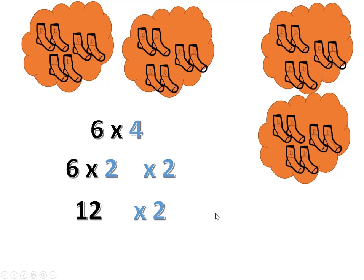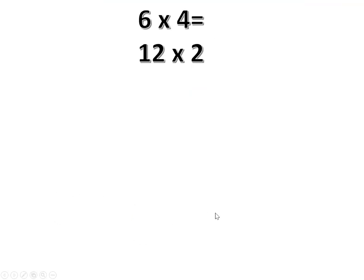How to double 12? Let's rearrange 12 as 10 and 2. So to double it, 10 and 10 are 20. 2 plus 2 is 4. We've got 24.